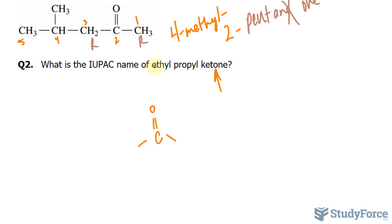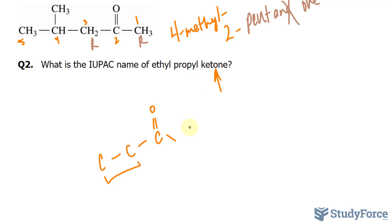We have ethylpropyl. Ethyl is a 2-carbon group, so we can write down a carbon here and a carbon here — this represents ethyl. And propyl is a 3-carbon group, so this alkyl group will have 1, 2, 3 carbons.